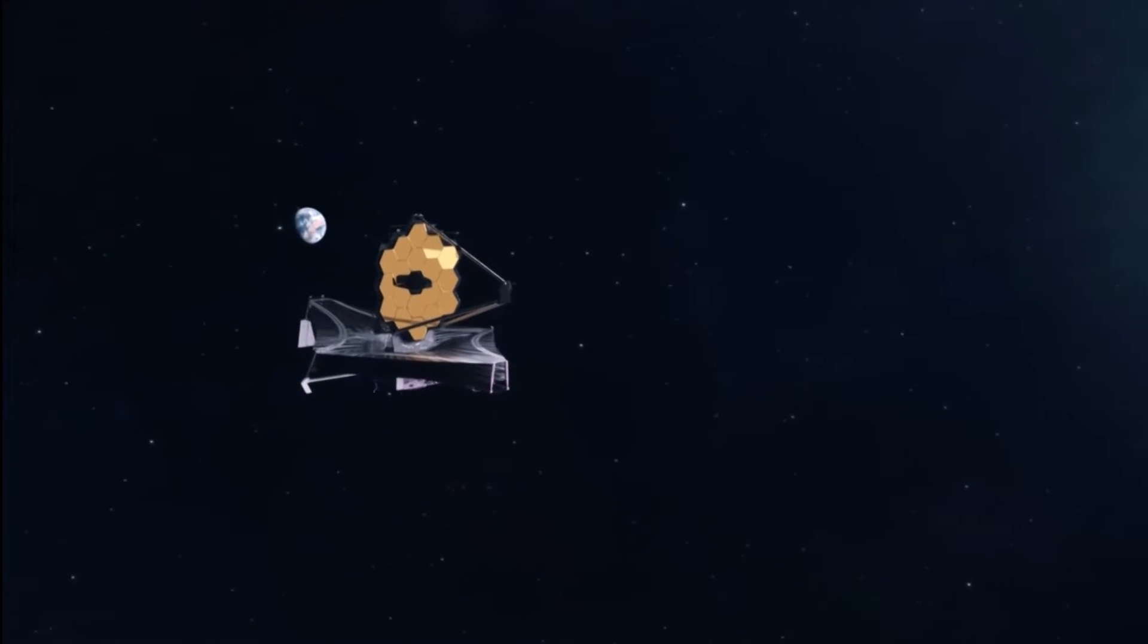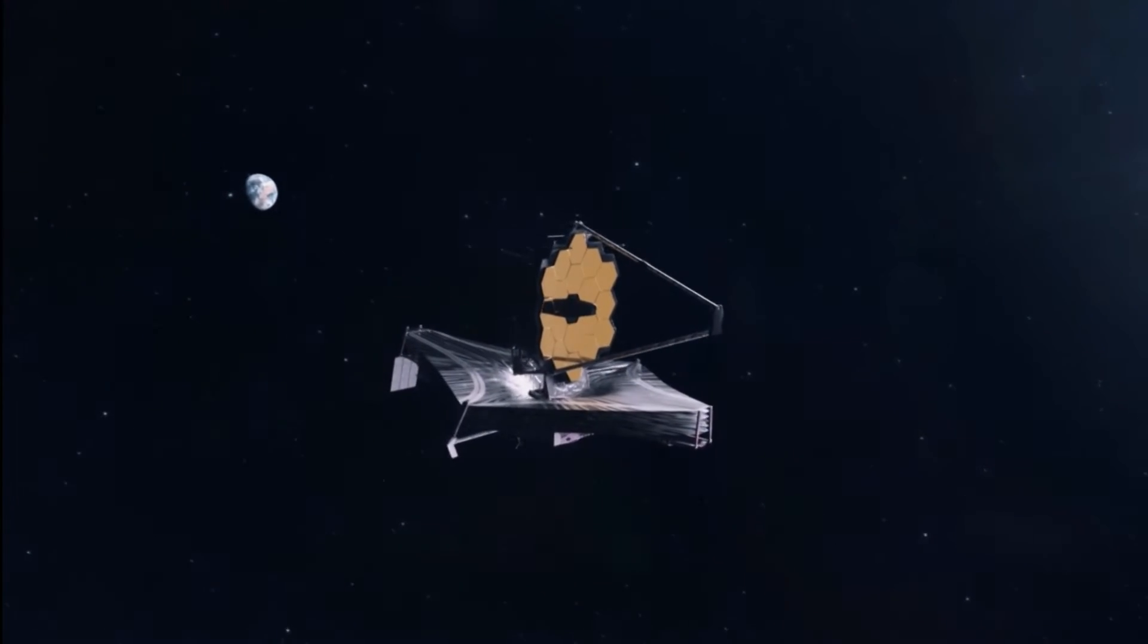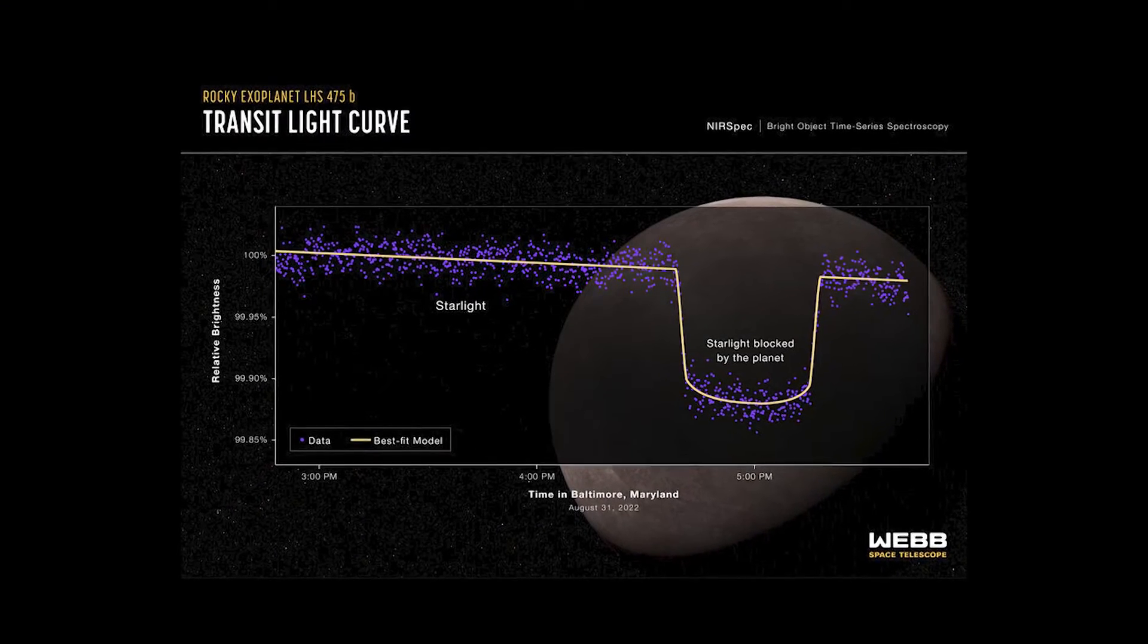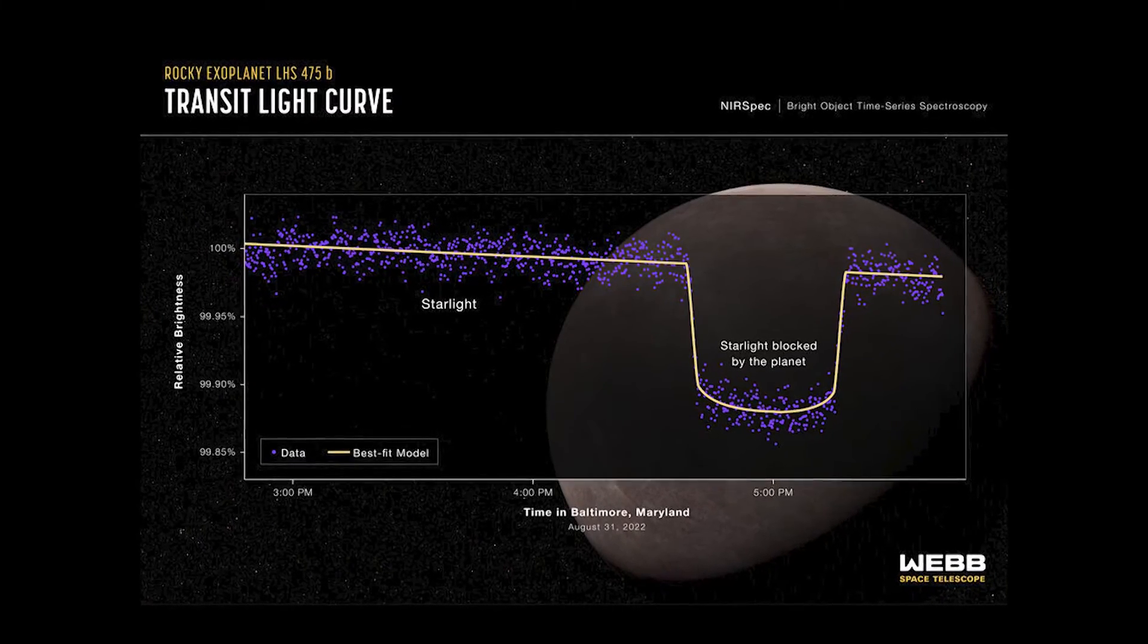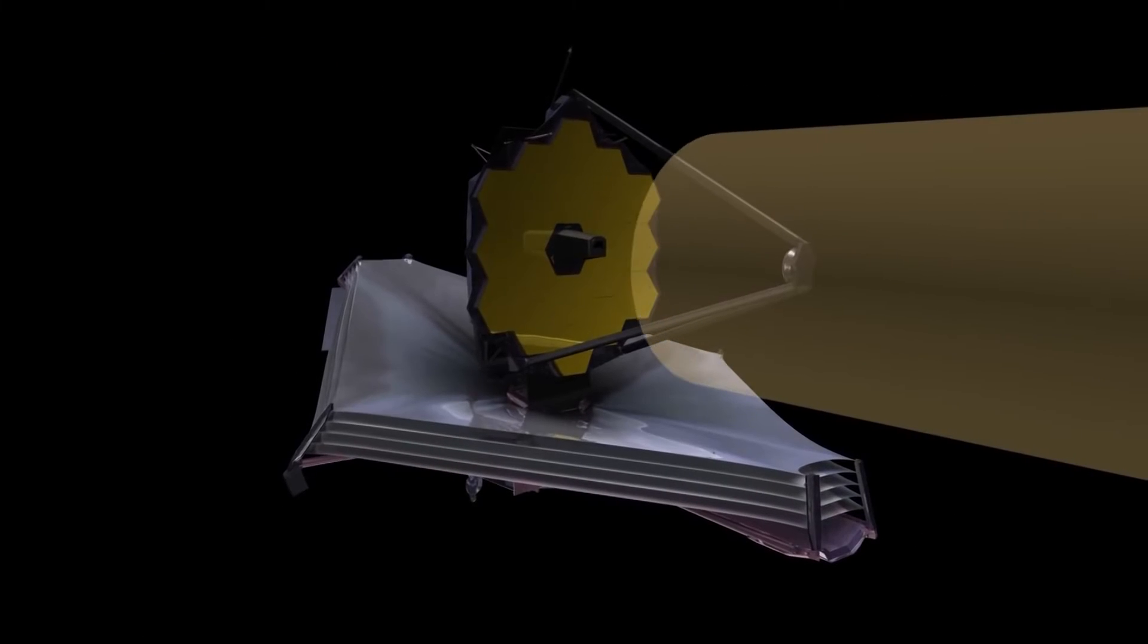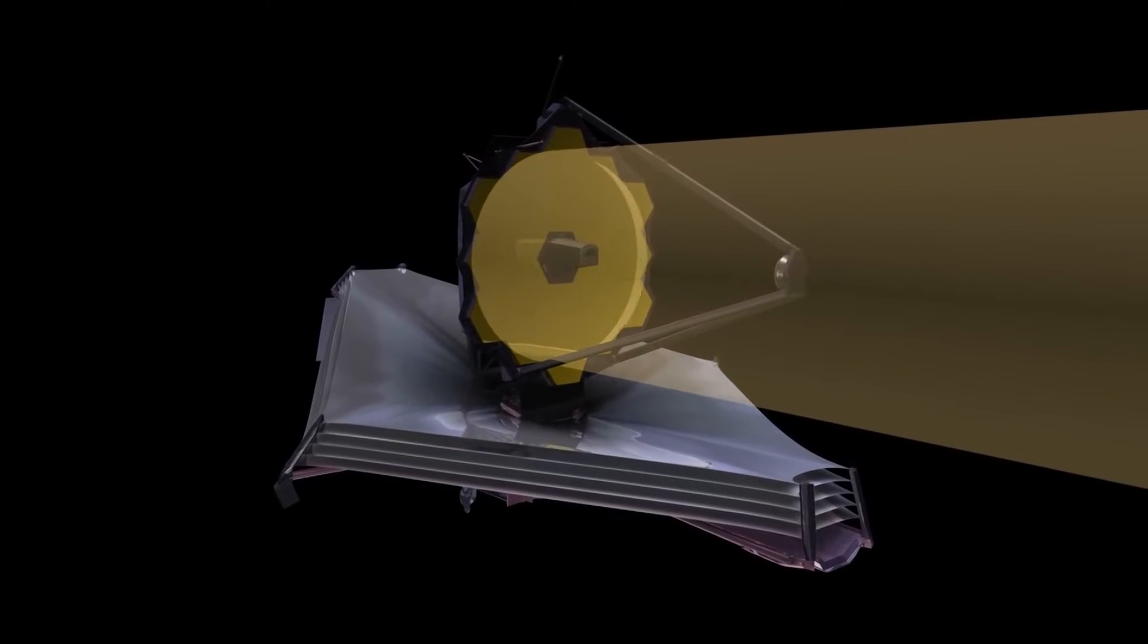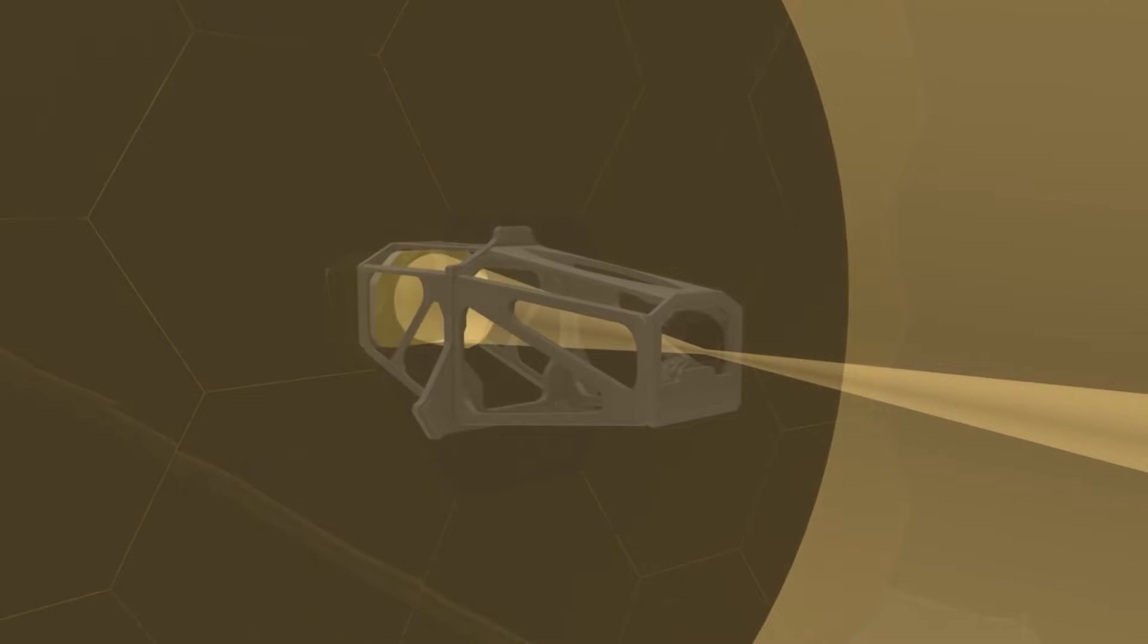Webb's powerful infrared capabilities will allow it to study exoplanets that are too cold or too distant to be studied by other telescopes. This discovery of LHS-475b also highlights Webb's capabilities for finding other small, rocky exoplanets. The increased power and precision of James Webb have allowed for the detection of small, rocky planets that would have remained elusive to other telescopes.